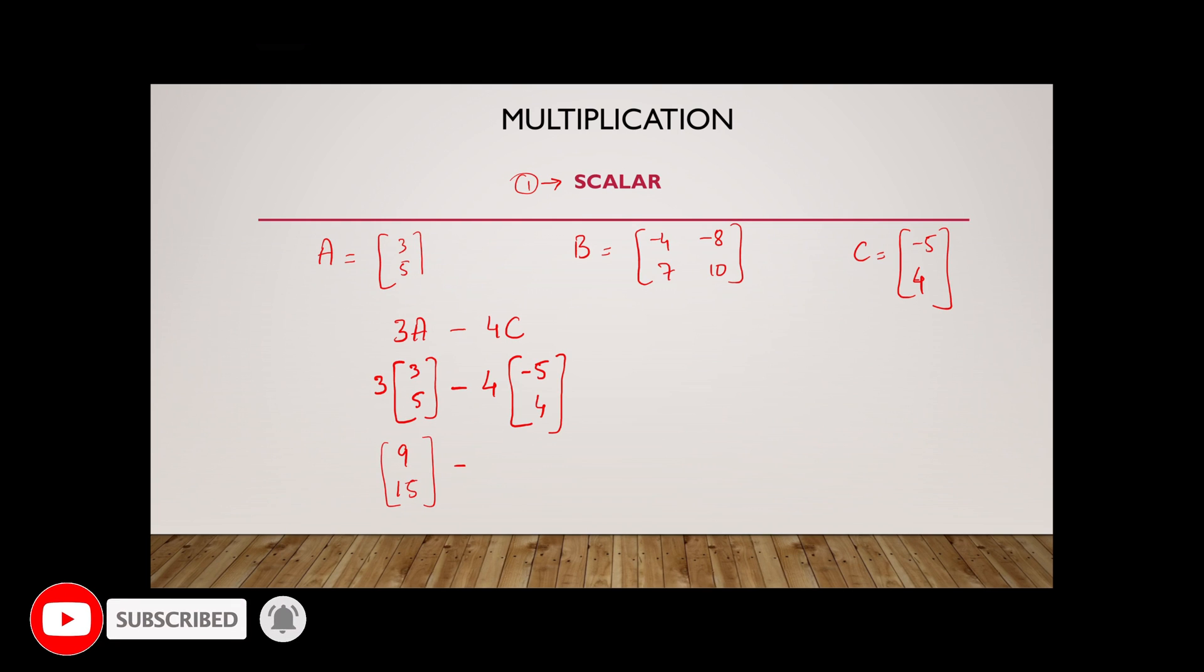Now the thing I want to emphasize on is what I'm about to do right now. I'm going to leave this minus sign as it is, and then I'm going to take this 4, and then I'm going to multiply it with minus 5, and then I'm going to multiply it with 4. Now the minus sign stays intact. So 4 times minus 5 is going to give me negative 20, and 4 times 4 is going to give me positive 16.